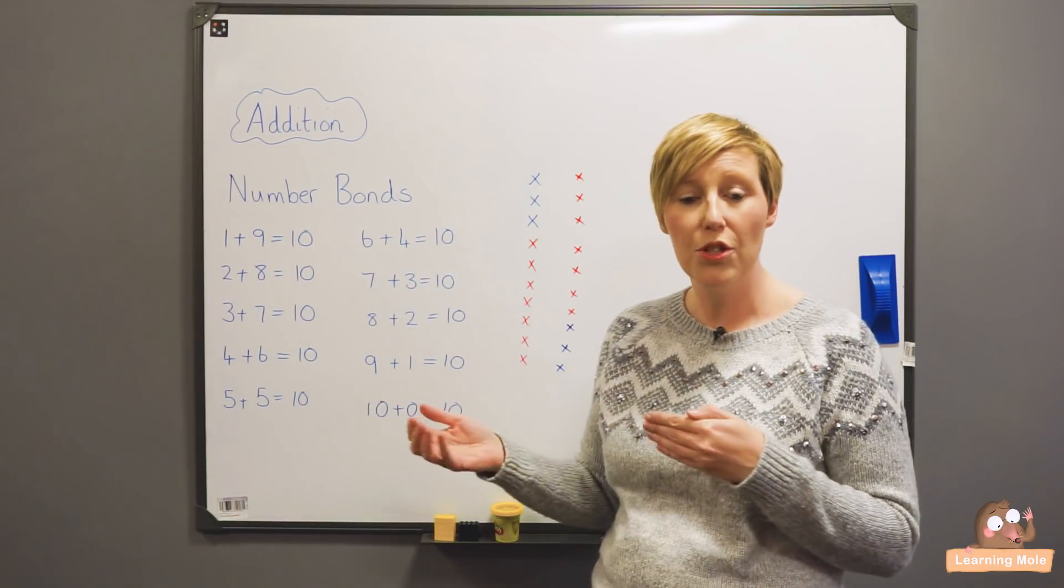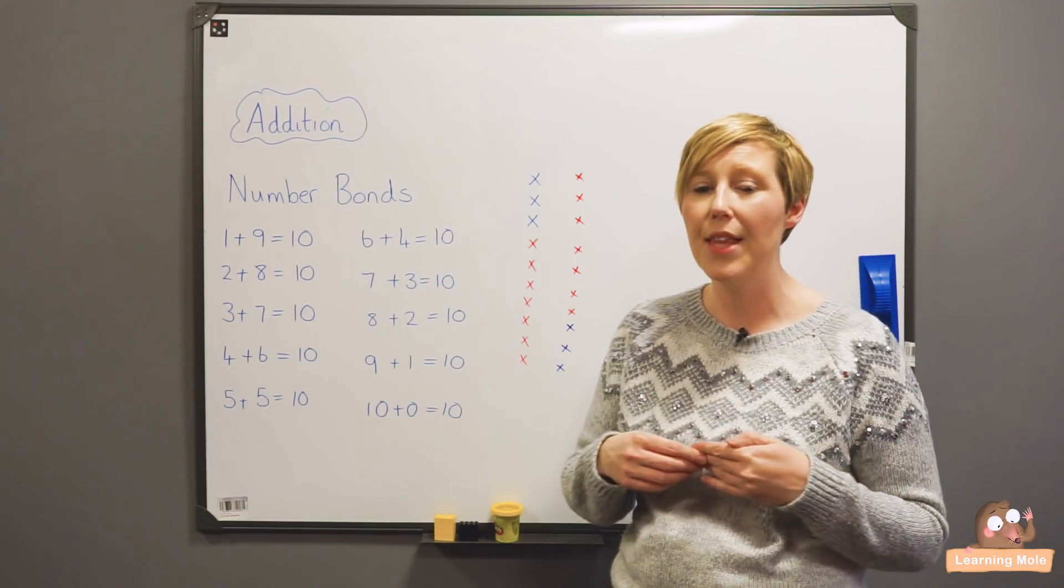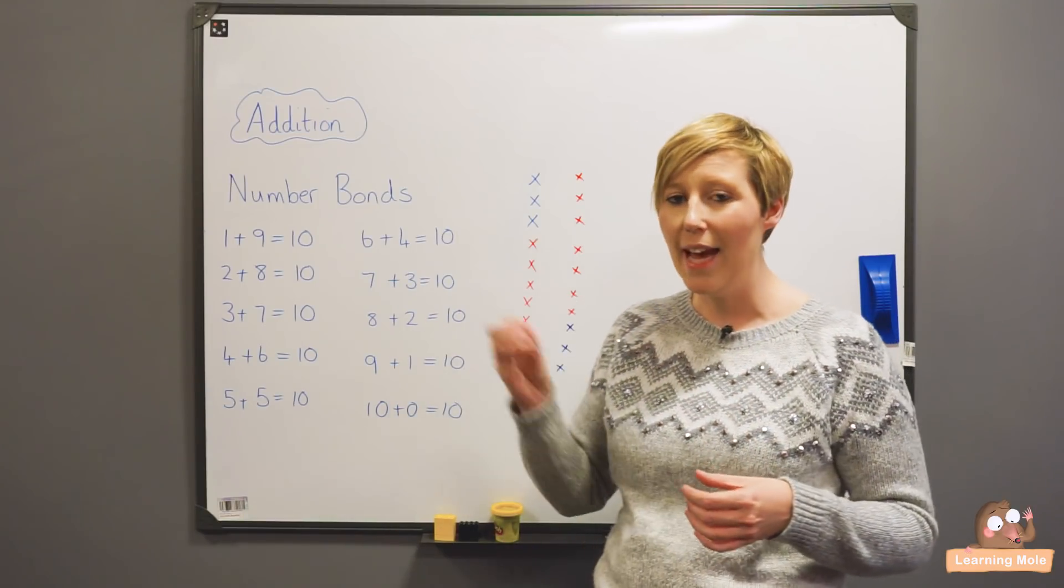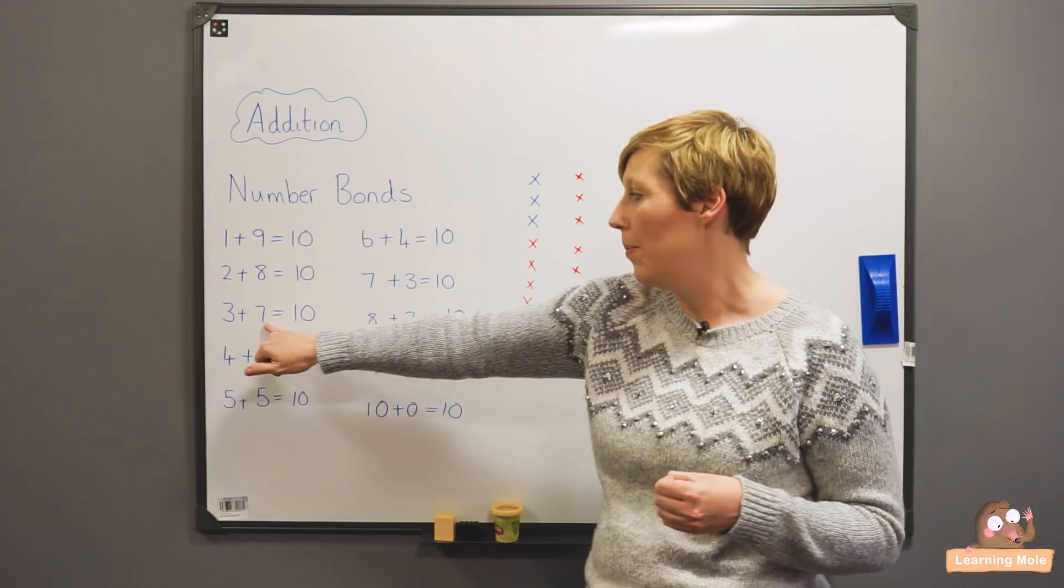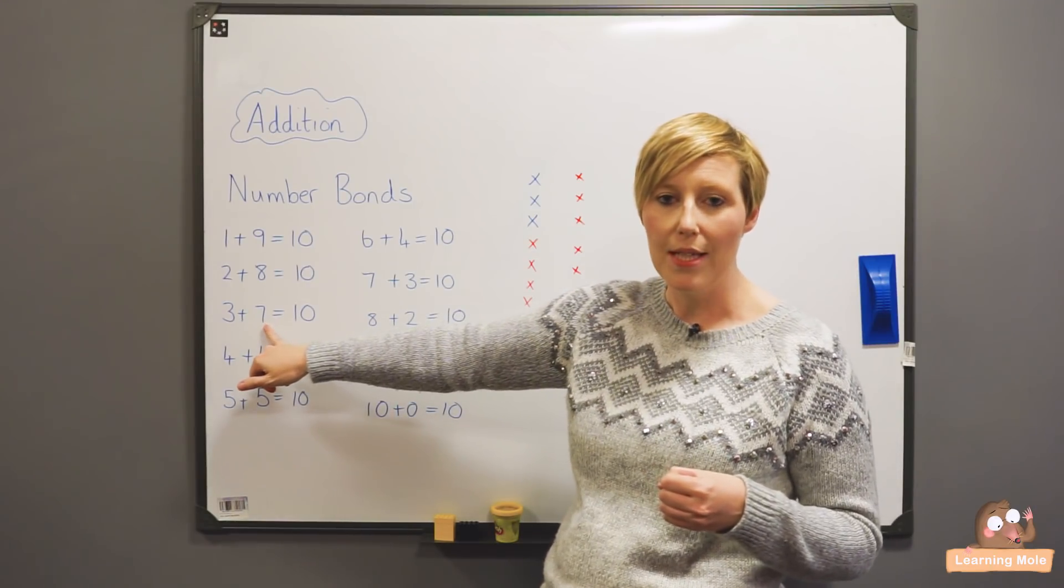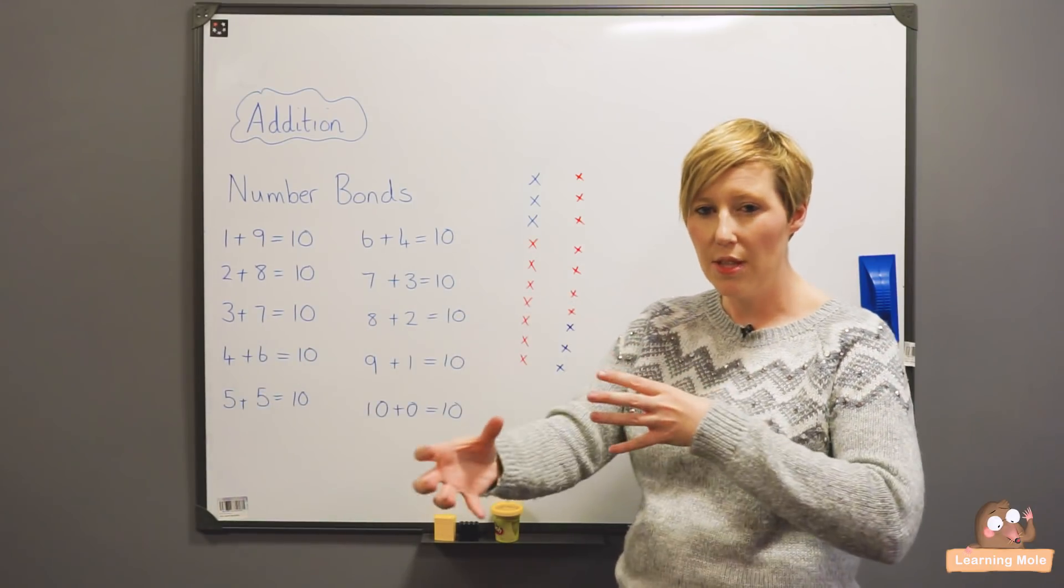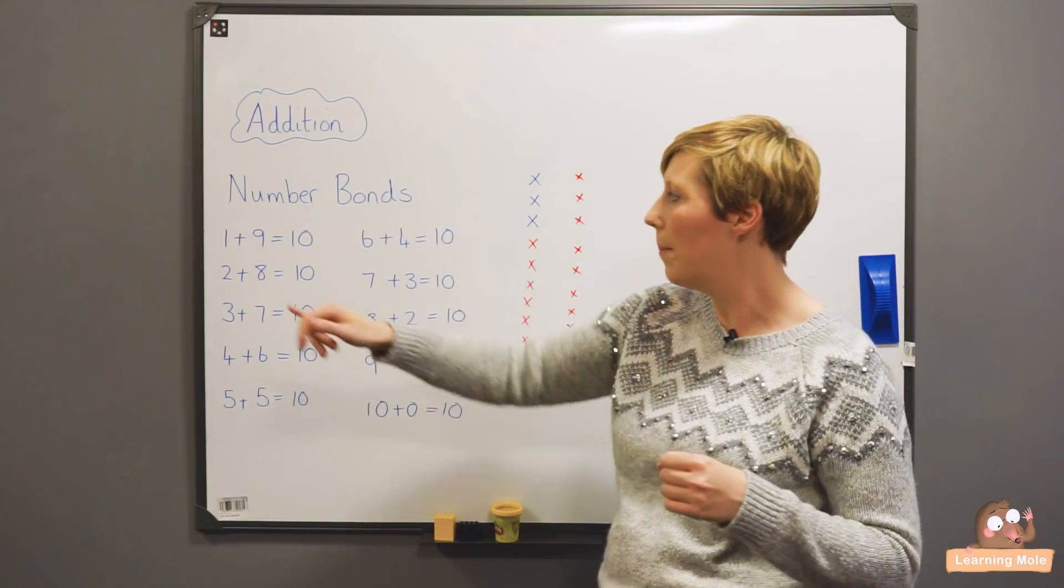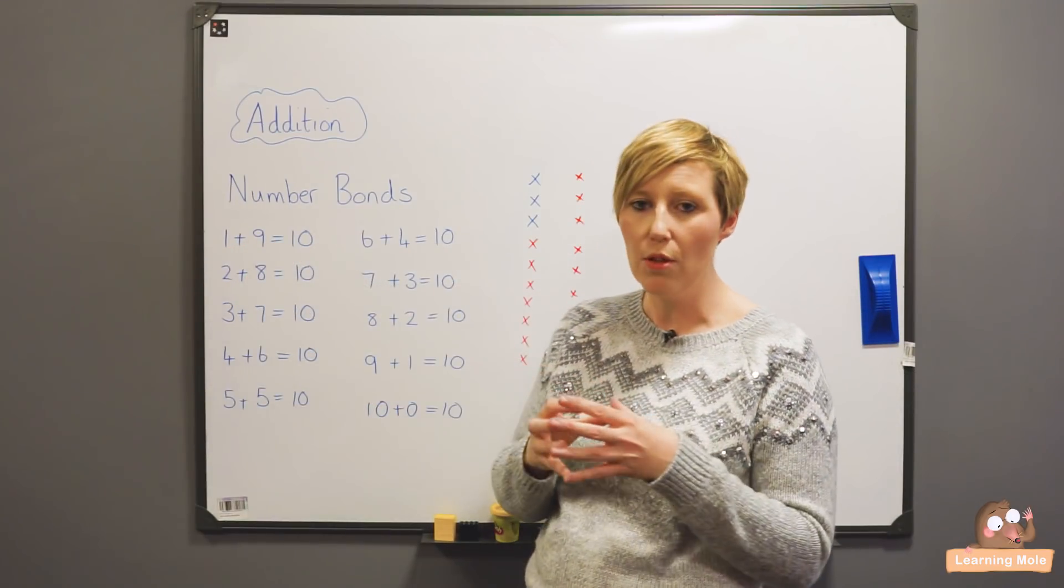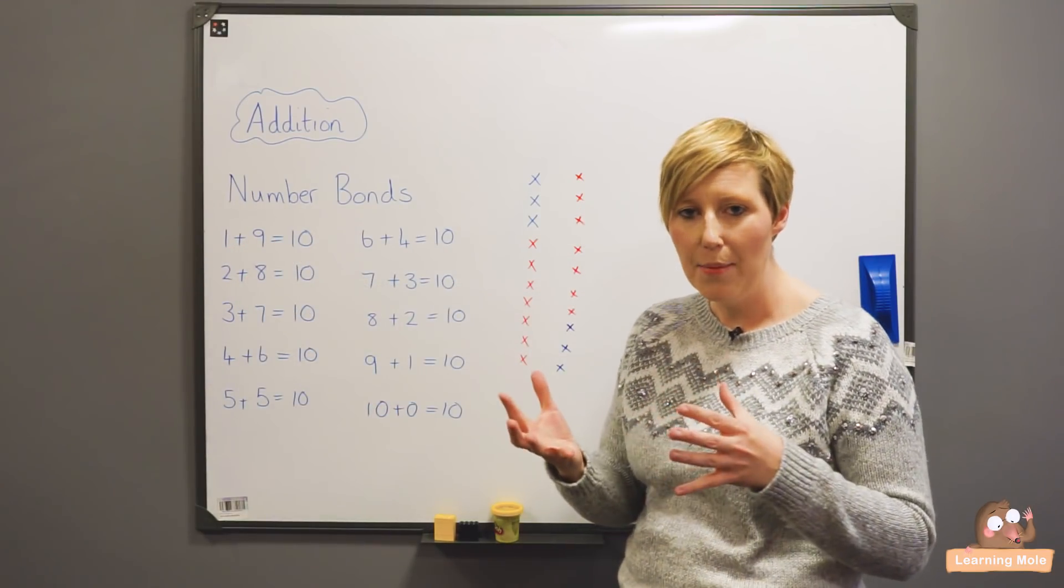So they would say a number from one to ten, and then they would call out a person and they have to give them the number that adds to it to get to ten. So basically you're just thinking about that relationship between the two numbers, that one plus nine always goes together to make ten. So the game goes a bit like this.